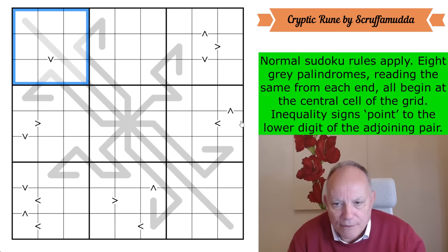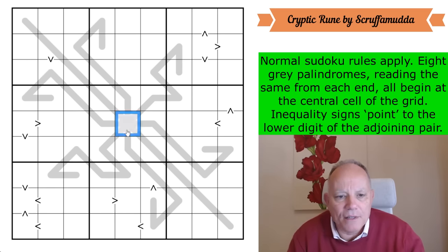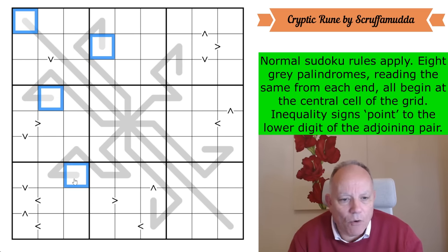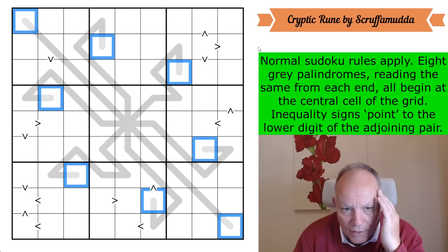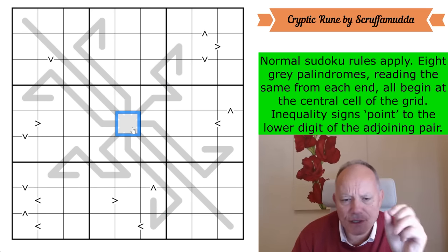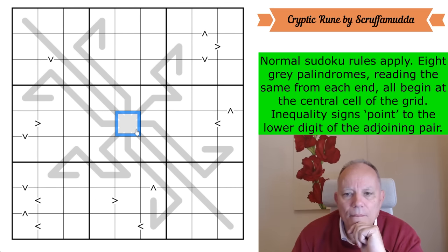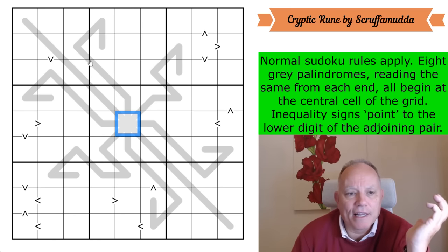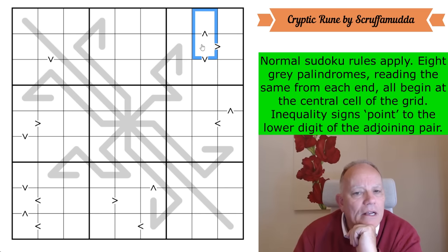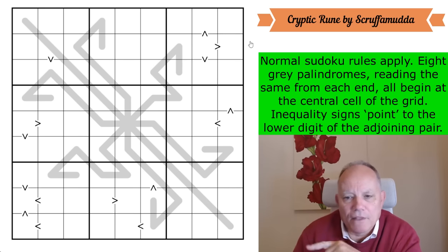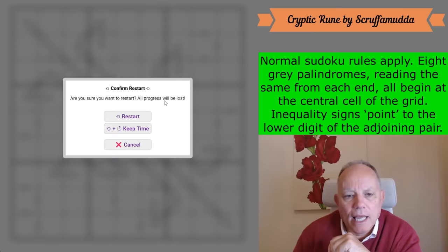The first link is to this cryptic rune by Scruffermudder, and I love the rules here. Normal Sudoku rules apply, that's one to nine in every row, every column, and every three by three box, as usual. Eight grey palindromes, which means they read the same from each end, all begin at the central cell of the grid. That gives us this very weird grid shape, and the only other rule is that inequality signs point to the lower digit of the adjoining pair. Let's get cracking.